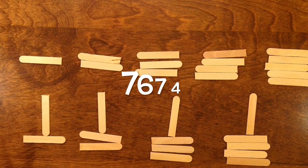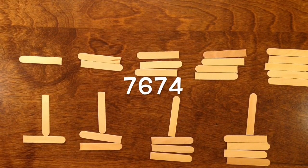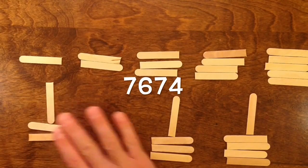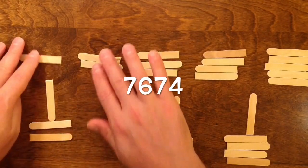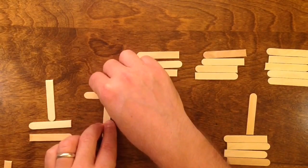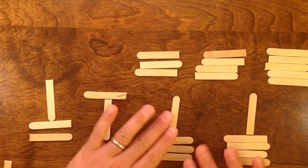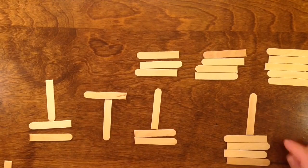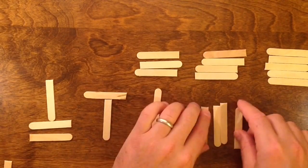So if I wanted to represent a number like 7,674, I would represent 7,000 with a horizontal 7, and then 6 with a vertical 6, another 7 for 70. 4 would be a vertical 4.